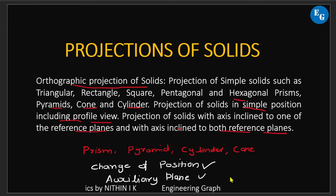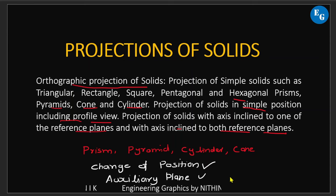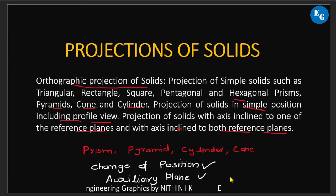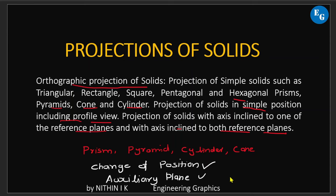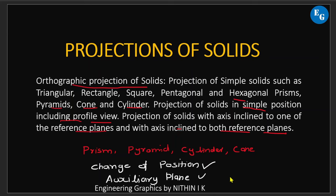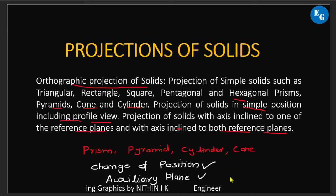The definition of solids and types of solids is very interesting. The parts of a solid include the base, faces, edges, slant edges, generator, and axis among others.